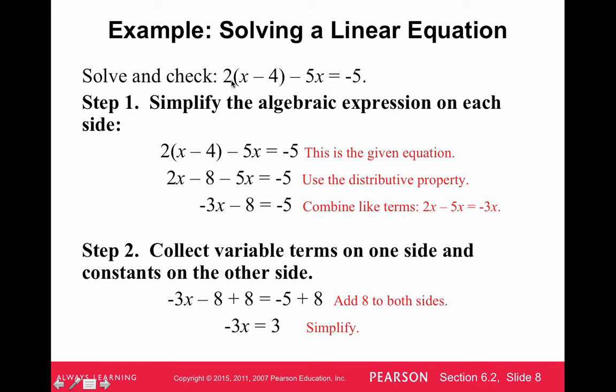Here's one. We have 2 times the quantity x minus 4 minus 5x equals negative 5. The first thing is to simplify. We want to distribute the 2 into the x minus 4 so that we get 2x minus 4 times 2, which is minus 8. We still have minus 5x equals negative 5. Then we want to combine like terms. 2x and minus 5x is negative 3x. Then we have negative 3x minus 8 equals negative 5.